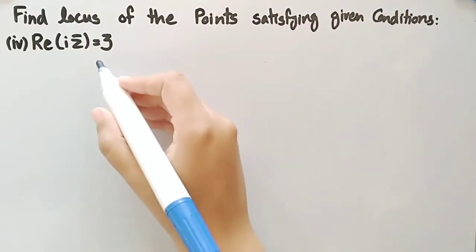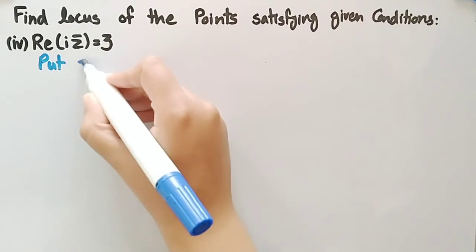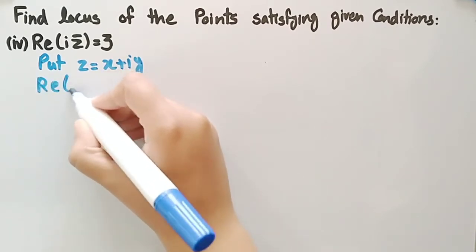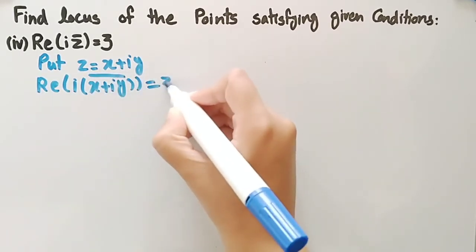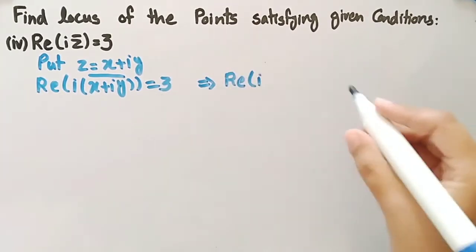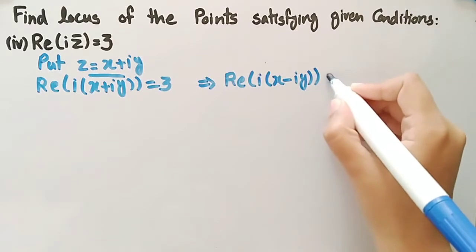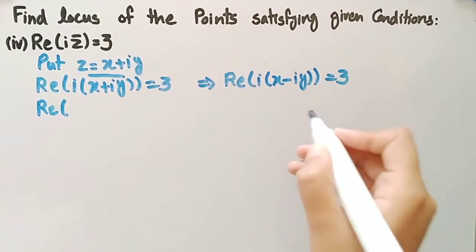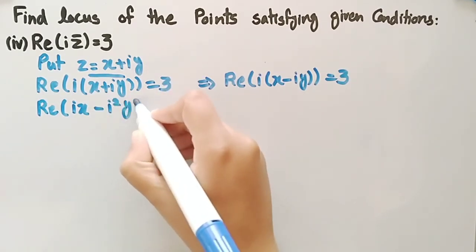The fourth condition is: real part of iota times z conjugate is equal to 3. Firstly, we put z equal to x plus iota y. We get real part of iota times x plus iota y conjugate equal to 3. The conjugate of x plus iota y is x minus iota y, so this becomes real part of iota times x minus iota y equal to 3.